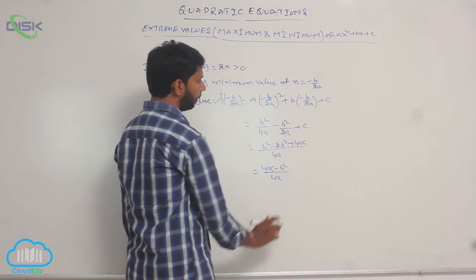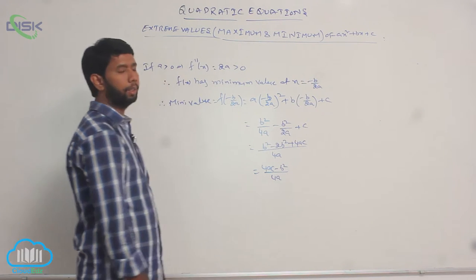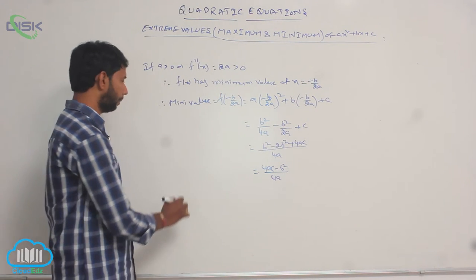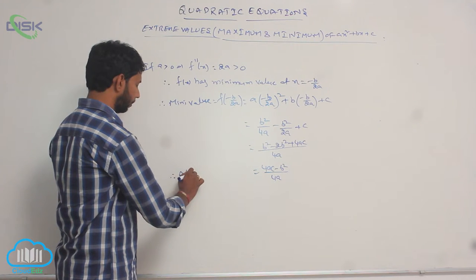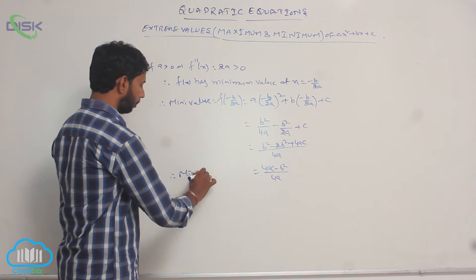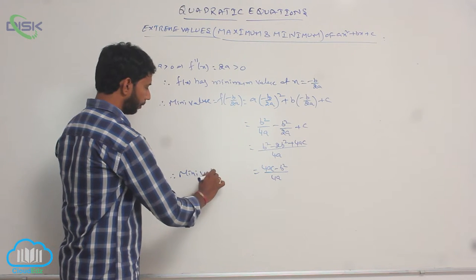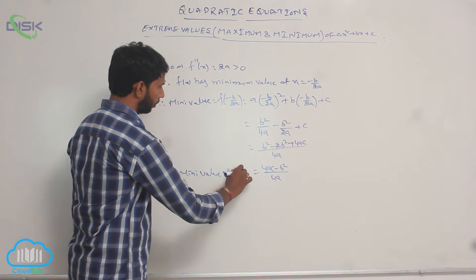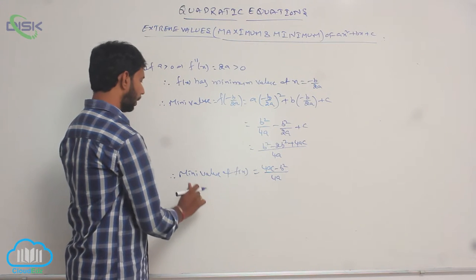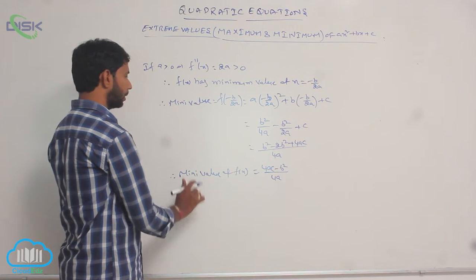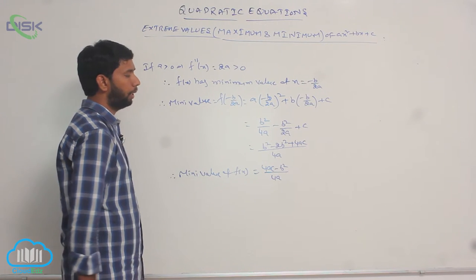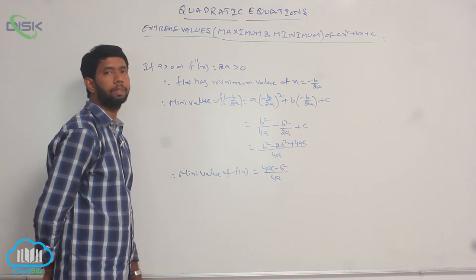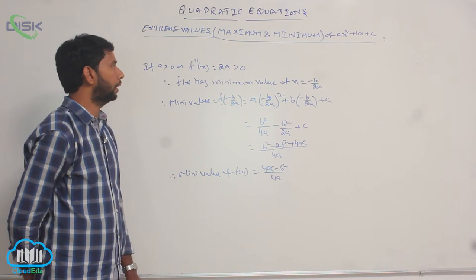The minimum value is equal to 4ac minus b square by 4a. Therefore, the minimum value of f of x is equal to 4ac minus b square by 4a.